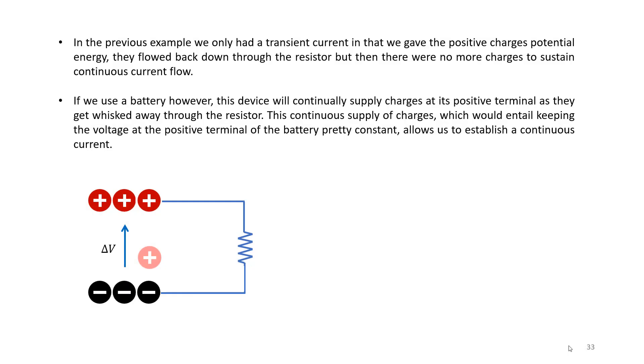So in the previous example we only had what we could call a transient current, in that we gave the positive charges some potential energy which allowed the positive charges to flow back down to the negative charges through the resistor. But then, of course, once those charges have flown through, we don't have any more to sustain a continuous current flow.